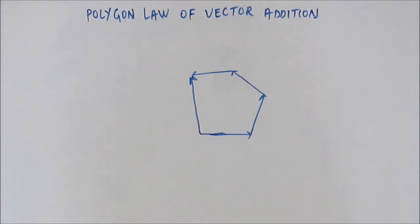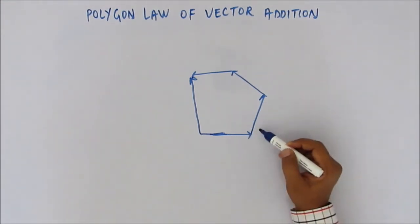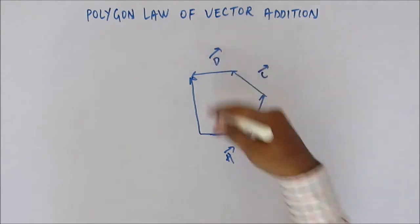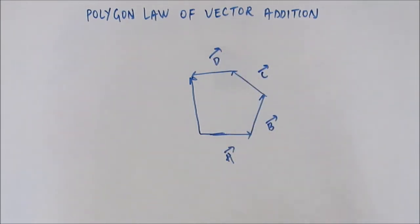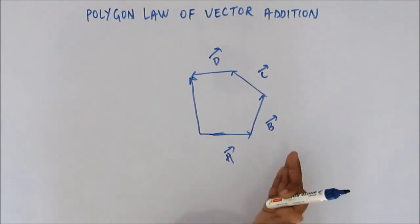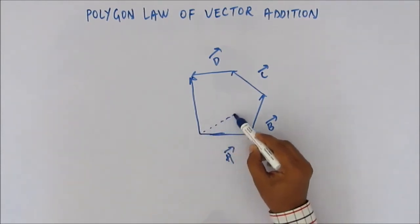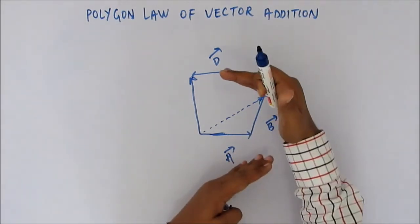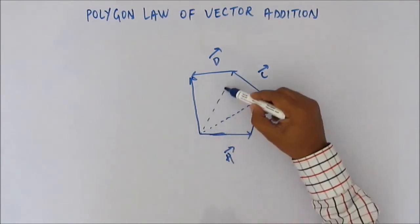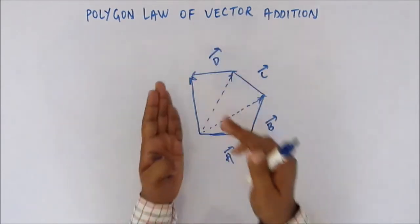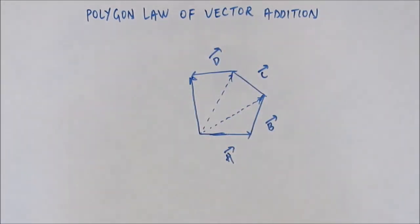This comes directly from the triangular law of vector addition. Let's name the vectors a, b, c, and d. The resultant of a + b + c + d, done step by step using the triangular law: a + b gives this vector; that vector plus c gives this vector; and that vector plus d gives the final resultant vector.